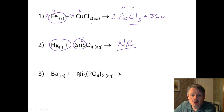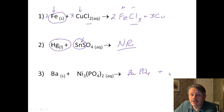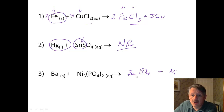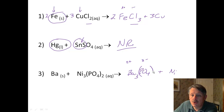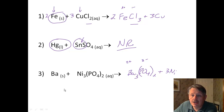How about number 3? Barium is higher than nickel on the activity series, so barium is going to go with the phosphate, and nickel will go alone. Barium has a 2+ charge, and phosphate is a 3−, so when we cross them we get Ba₃(PO₄)₂ — we need parentheses around the PO₄. We have 2 PO₄s, so that's balanced, but we need 3 nickels and 3 bariums, so now we have a balanced equation.